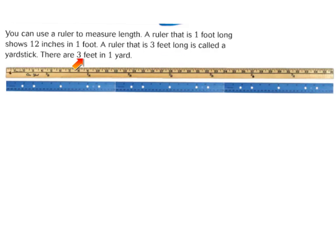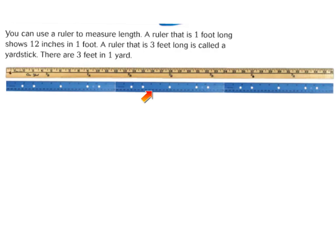A ruler that is 3 feet long is called a yardstick. There are 3 feet in 1 yard. Do you see how we have 1 ruler, 2 rulers, 3 rulers? The 3 rulers combined equals 1 entire yard, because it's 1 foot, 2 feet, 3 feet — and that's equivalent to 1 whole yard. It's very important to know these two measurement tools as we explore today's lesson.